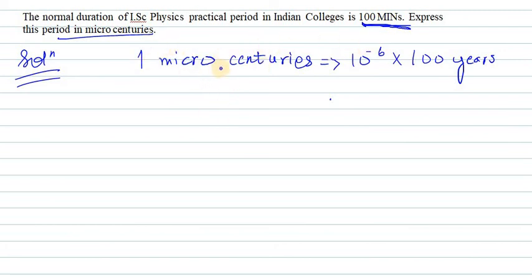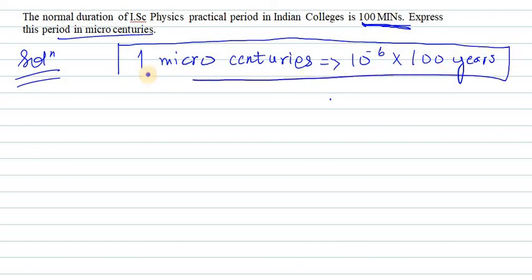For that, we should know how many years are in one micro century. In one micro century, we have 10^-6 × 100 years. When I simplify this, I get 10^-4 years.